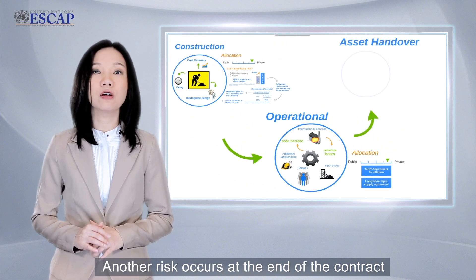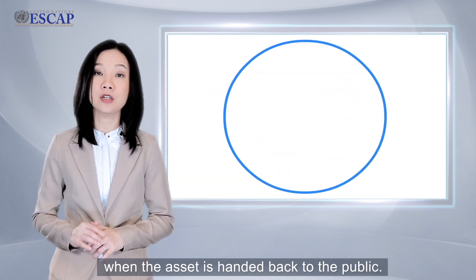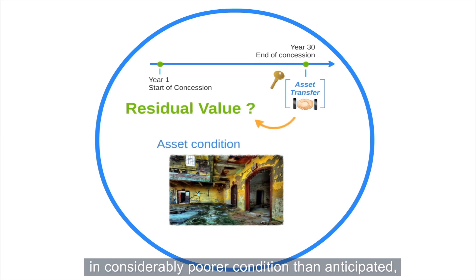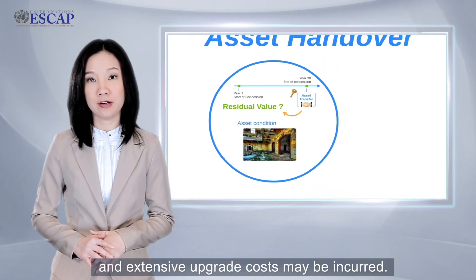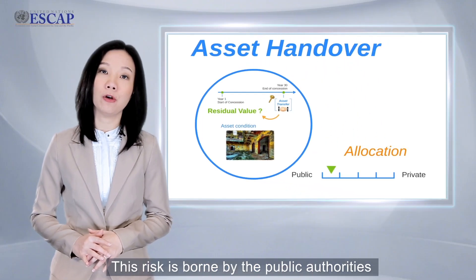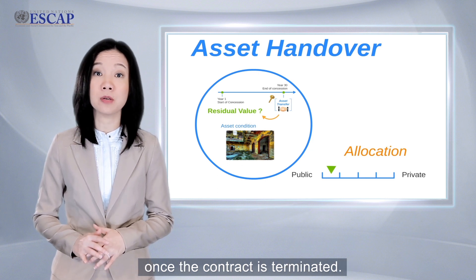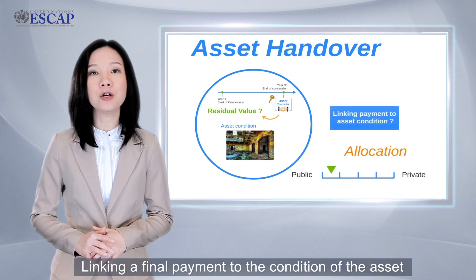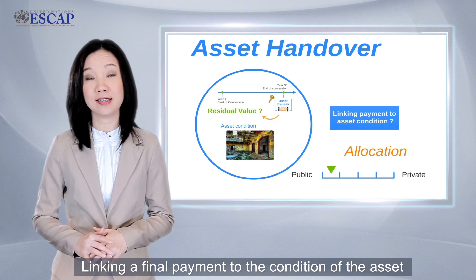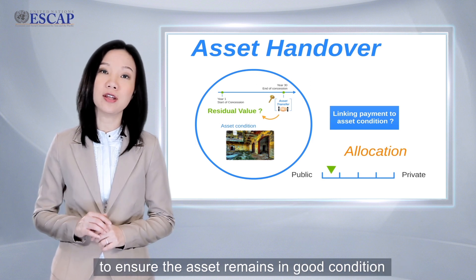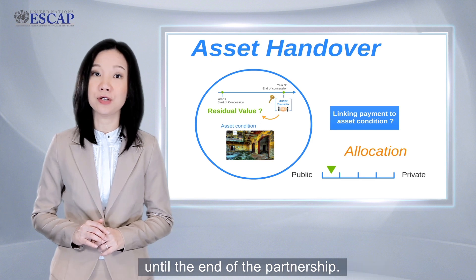Another risk occurs at the end of the contract when the asset is handed back to the public. At that time, the risk is that the asset may be in considerably poorer condition than anticipated, and extensive upgrade costs may be incurred. This risk is borne by the public authorities if they decide to operate the asset once the contract is terminated. Linking a final payment to the condition of the asset can incentivize the private partner to ensure it remains in good condition until the end of the partnership. The contract can also stipulate required standards the asset must meet at the time of transfer.